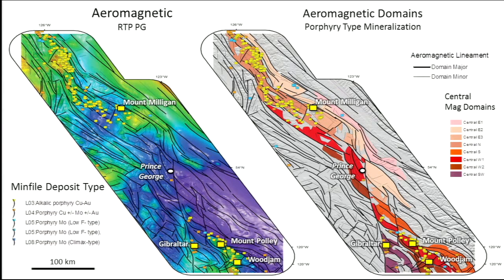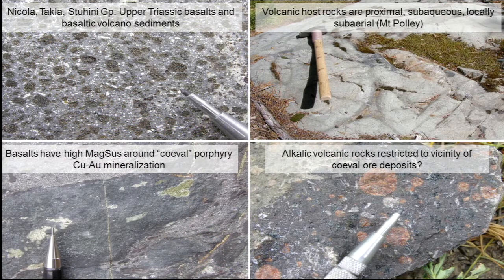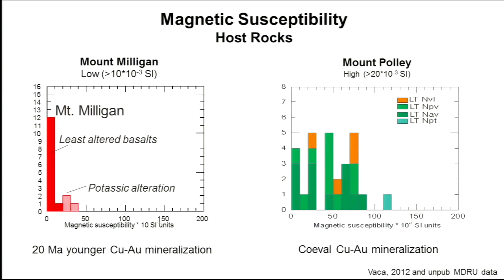That belt is sitting in Quesnel terrain, and we can now trace it for further mapping. Both the southern and northern areas are distinctly characterized by Triassic volcanics, which don't make things easier because they are highly magnetic in many cases. Work done by Santiago Oaga at MDIU shows that at Mount Milligan, the mineralization is a bit younger than at Mount Polly, and rocks there have lower magnetic susceptibility than in the Mount Polly area.